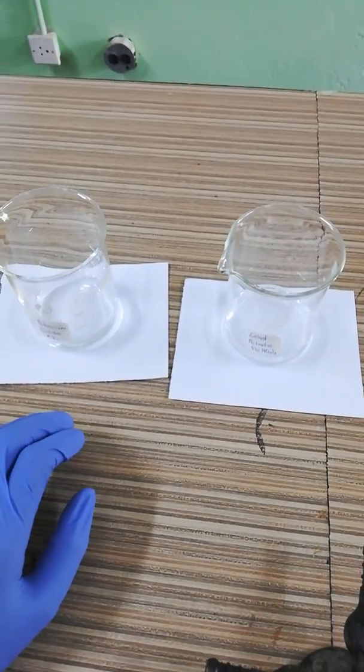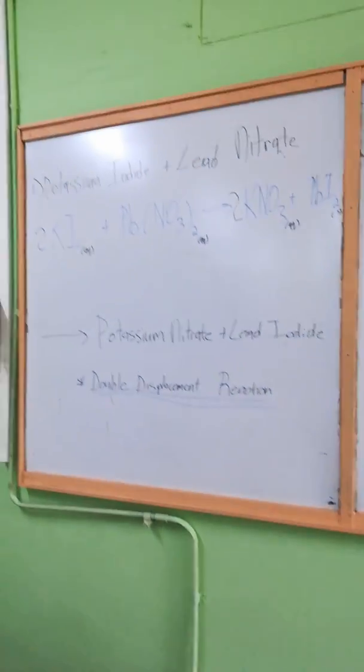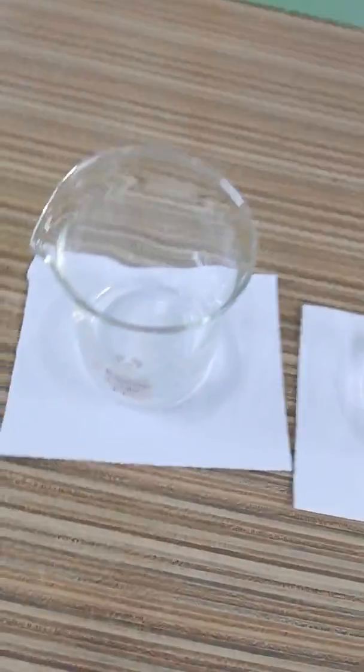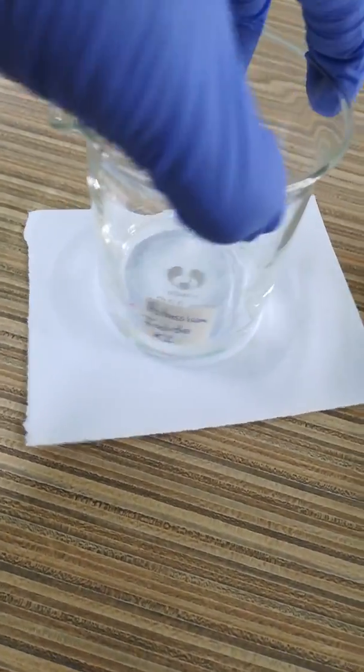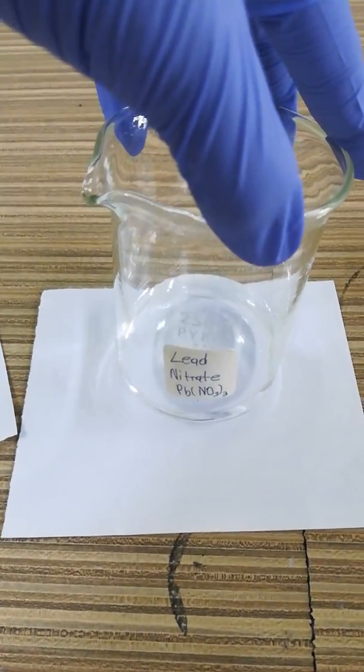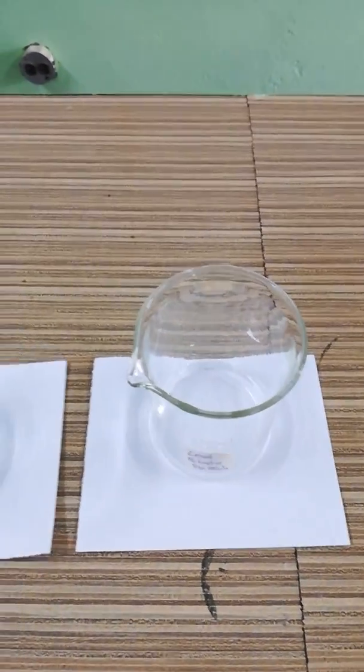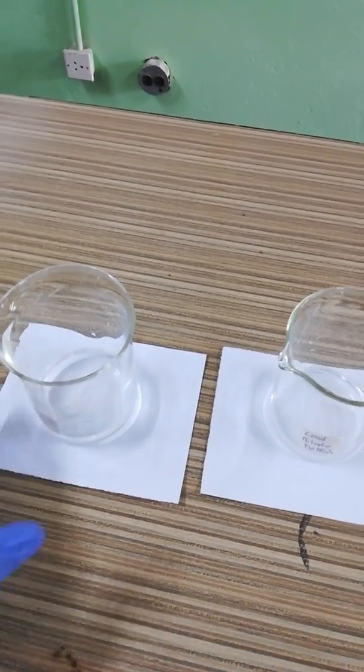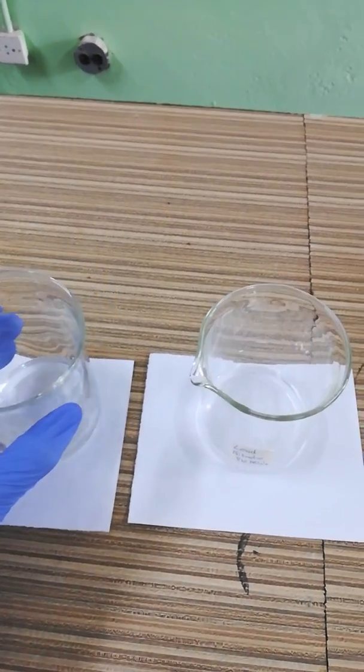The first experiment that I'll be doing is a reaction between potassium iodide and lead nitrate. As you can see here, potassium iodide and lead nitrate are both colorless liquids, but when I mix them there should be a color change.